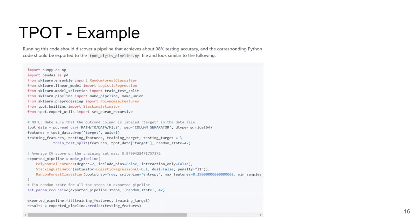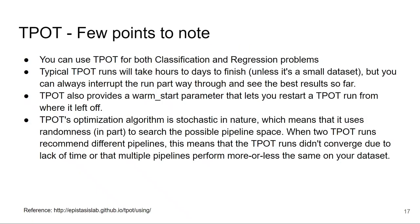A few points to note: you can use TPOT for both classification and regression problems, unlike Auto-sklearn library. Typical TPOT runs will take days to finish, but you can always interrupt the run and just see the best results so far. And the best thing is TPOT also provides a warm start parameter and it lets you restart a TPOT run from where it left off. This is also one of the best features of TPOT.